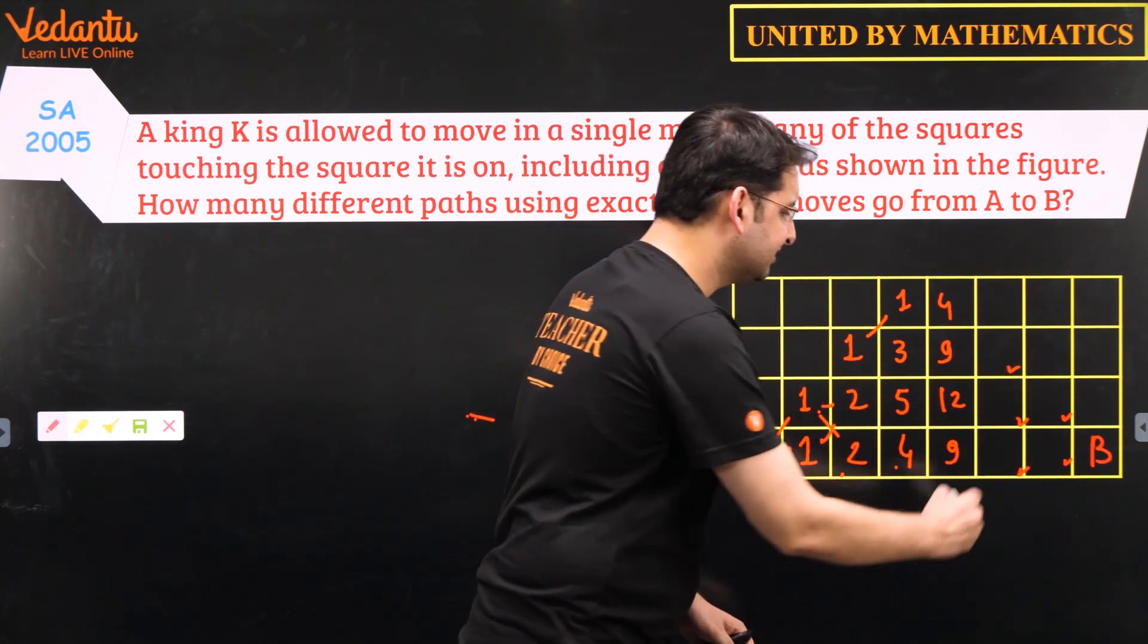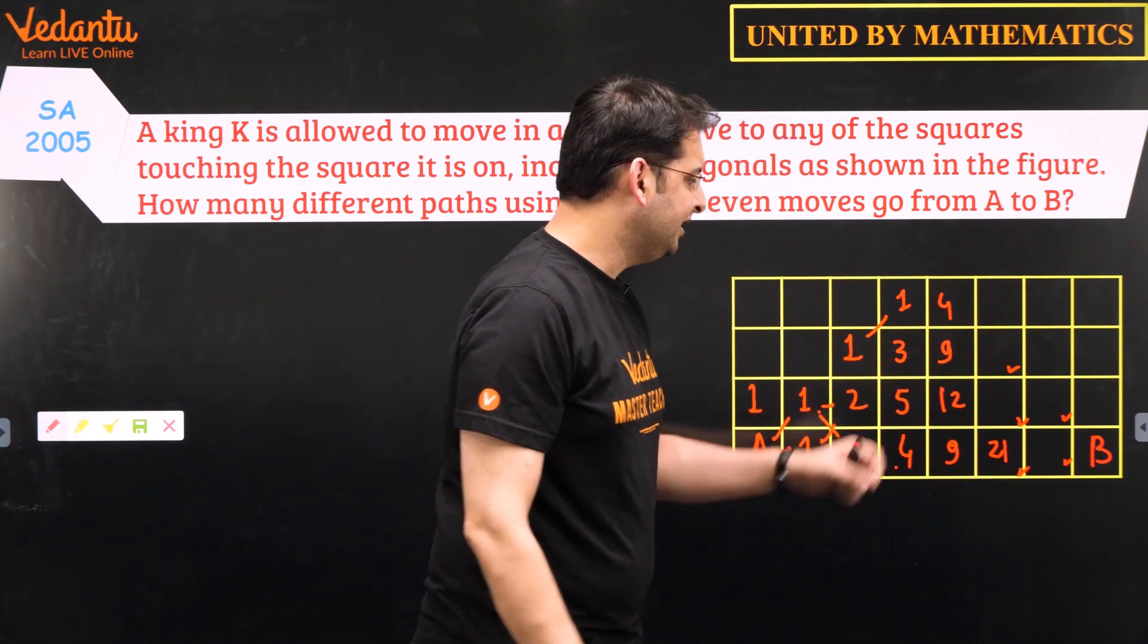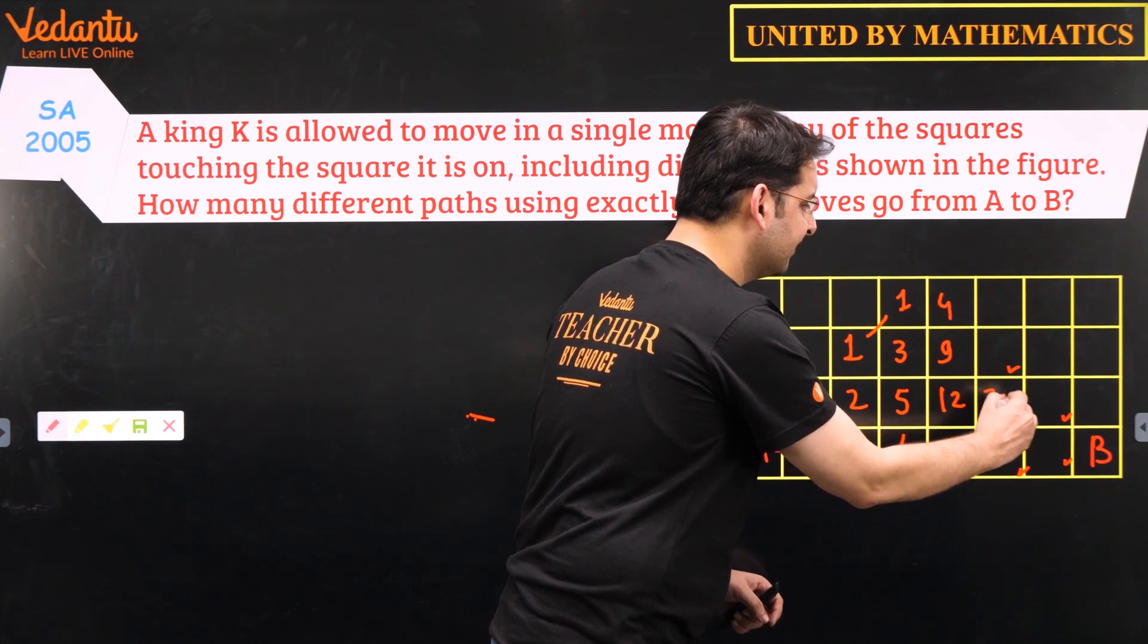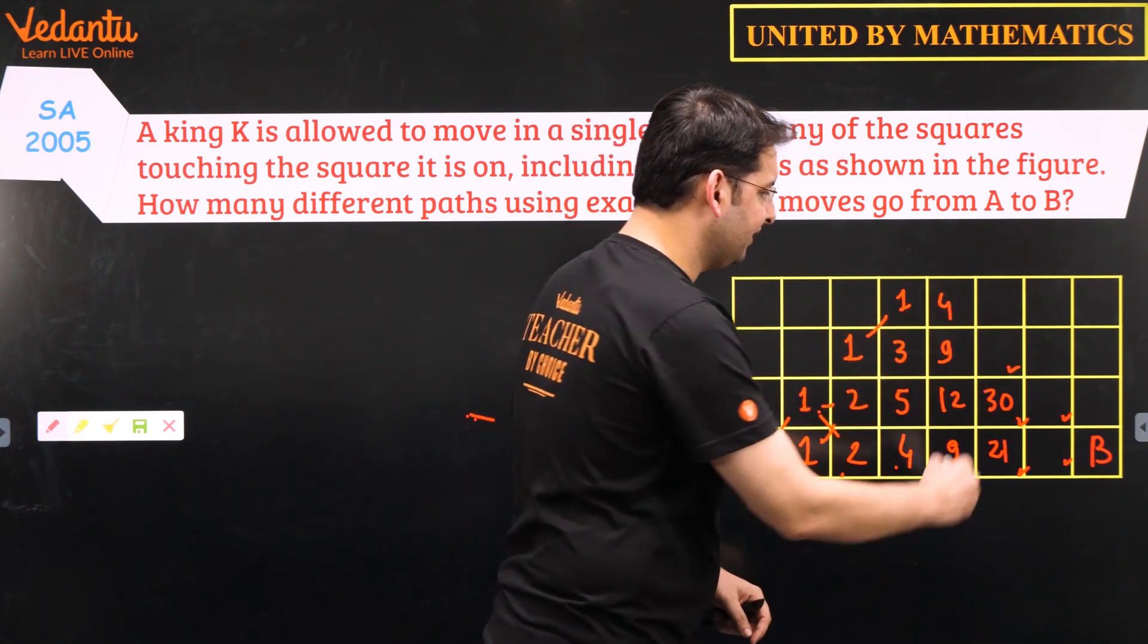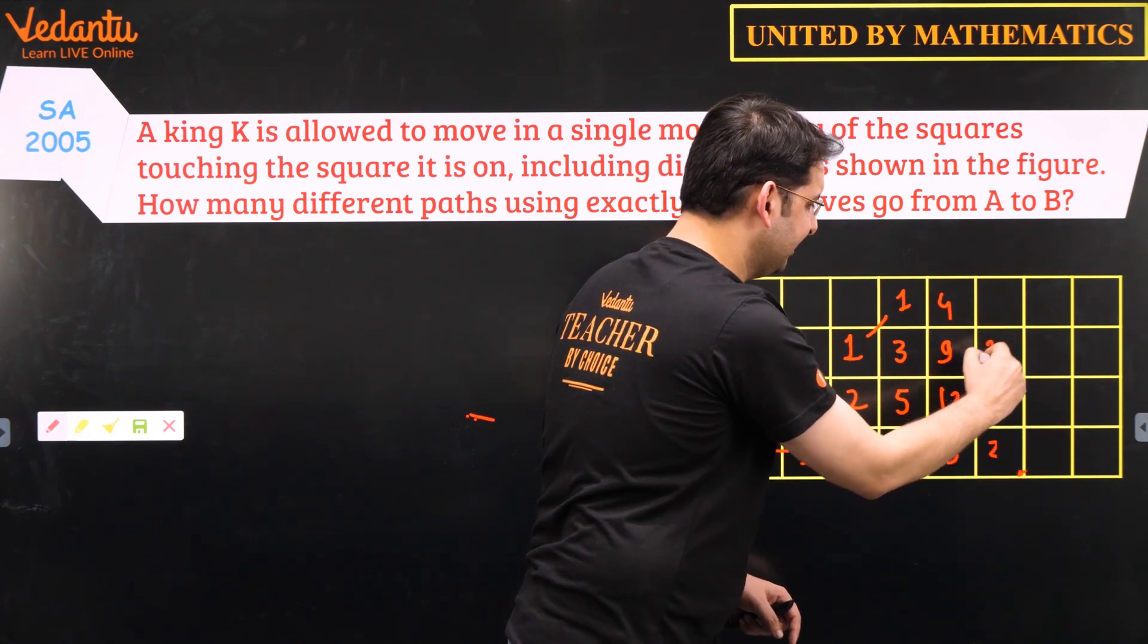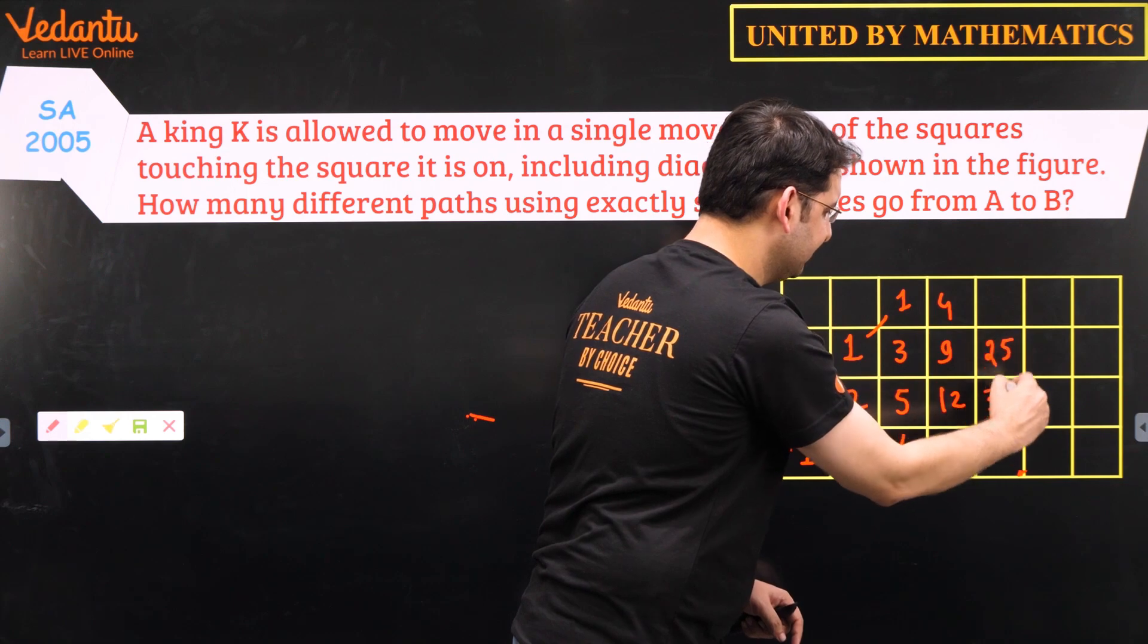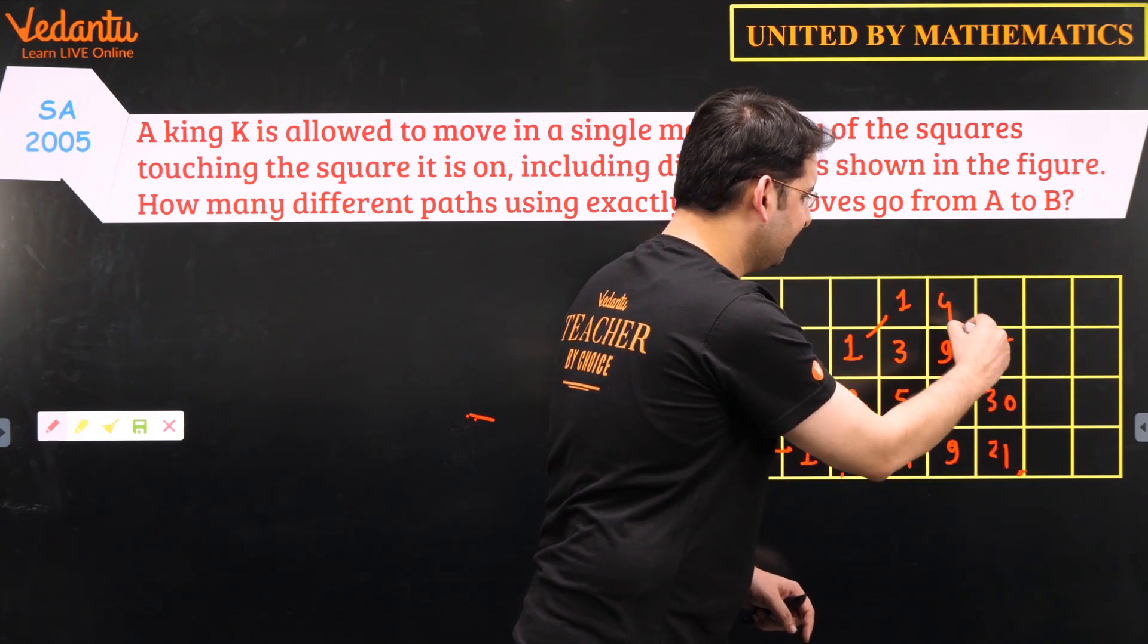So this number is of course 21, 9 plus 12. 9 plus 9 is 18 plus 12 gives me 30, 20. And for this, 13 plus 12 is 25. Let me write it again. 25. This is 30 and this is 21. And of course this is 13, 15.